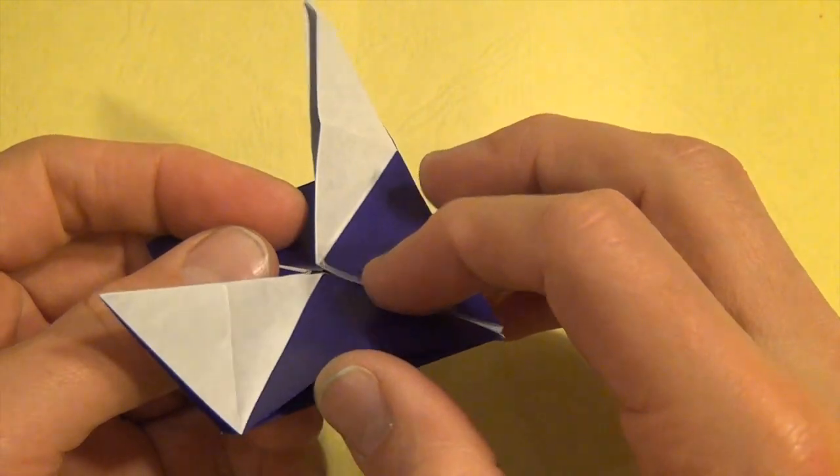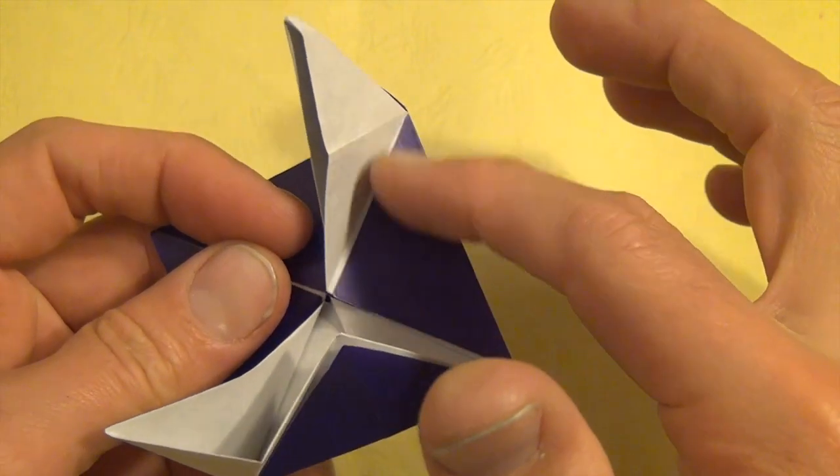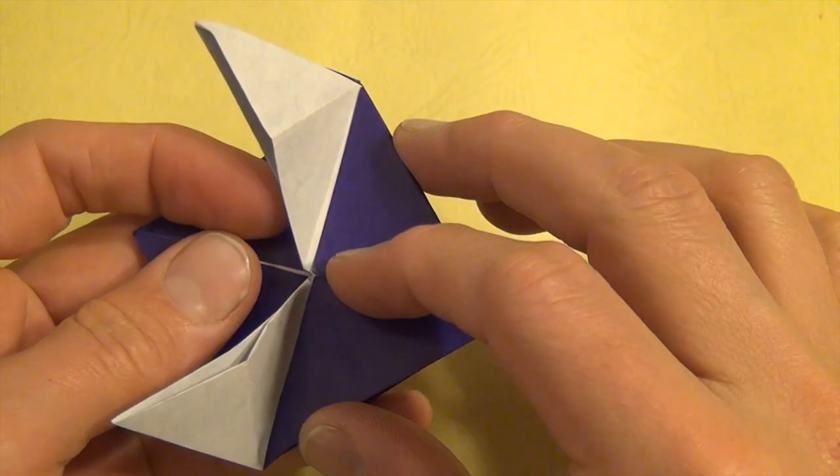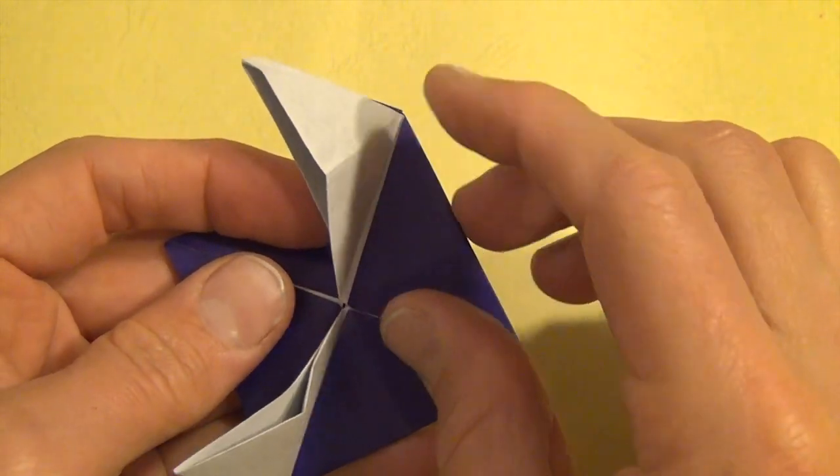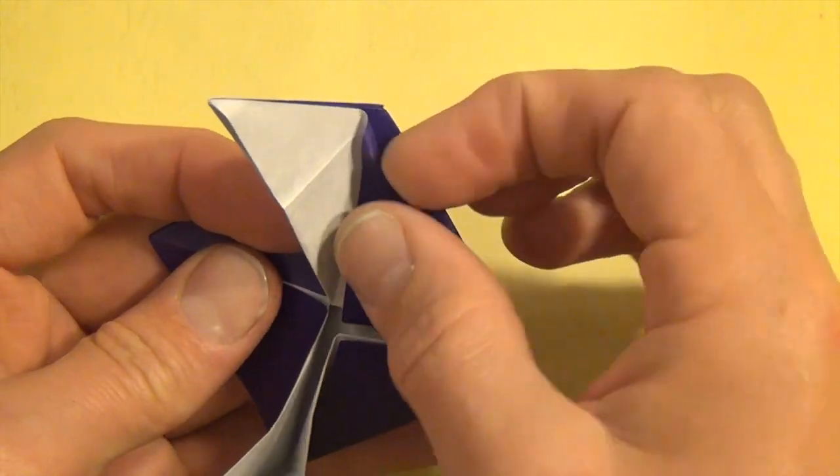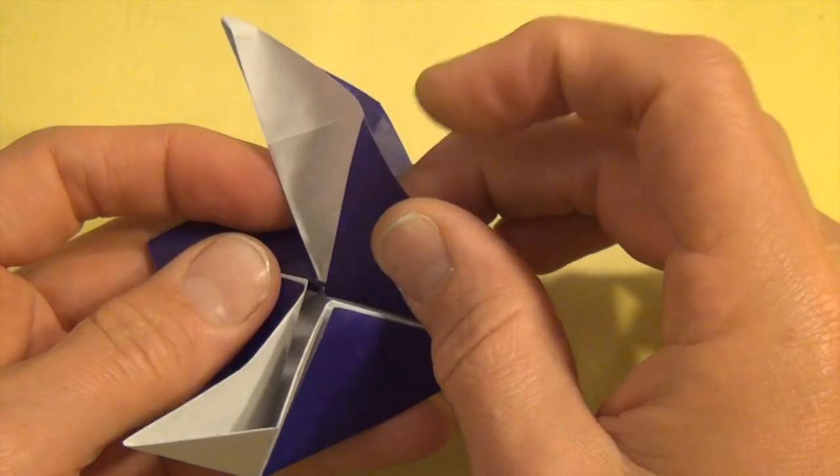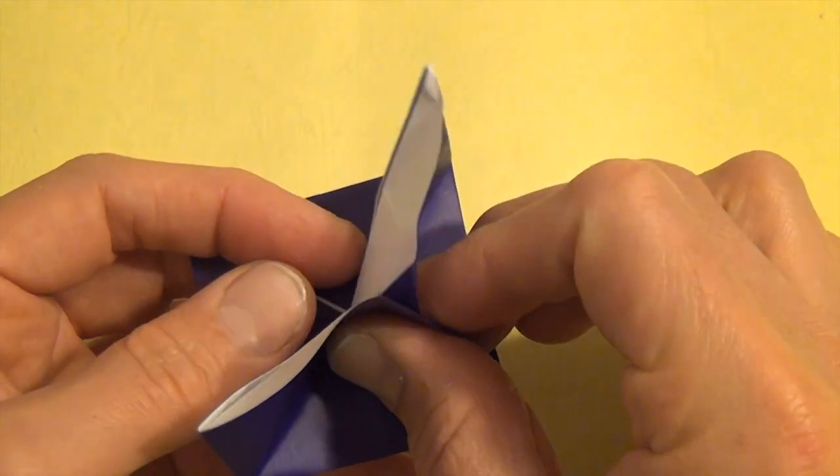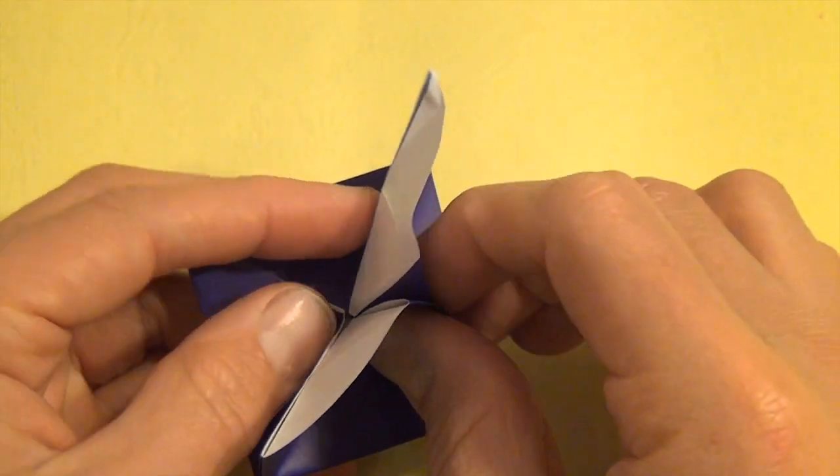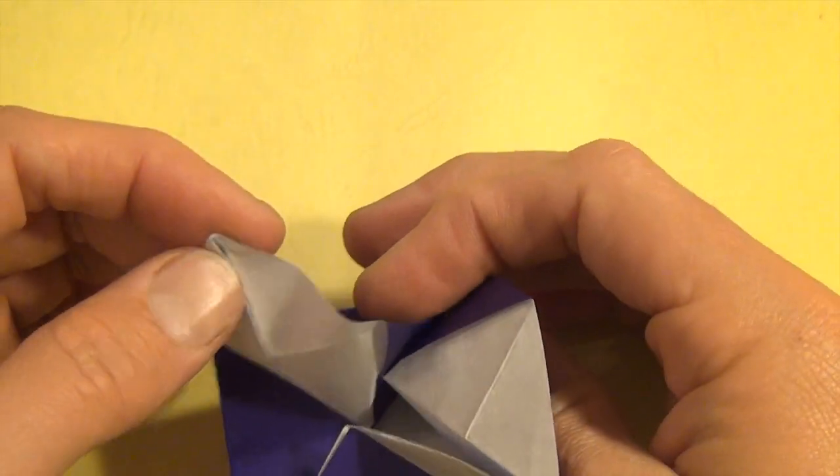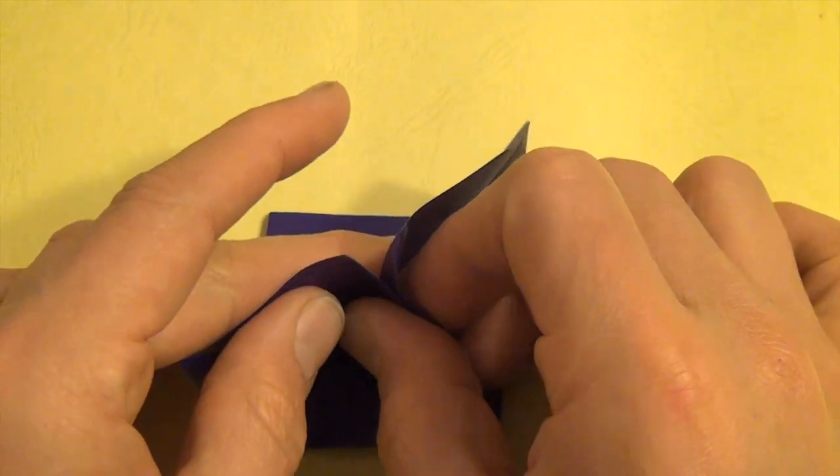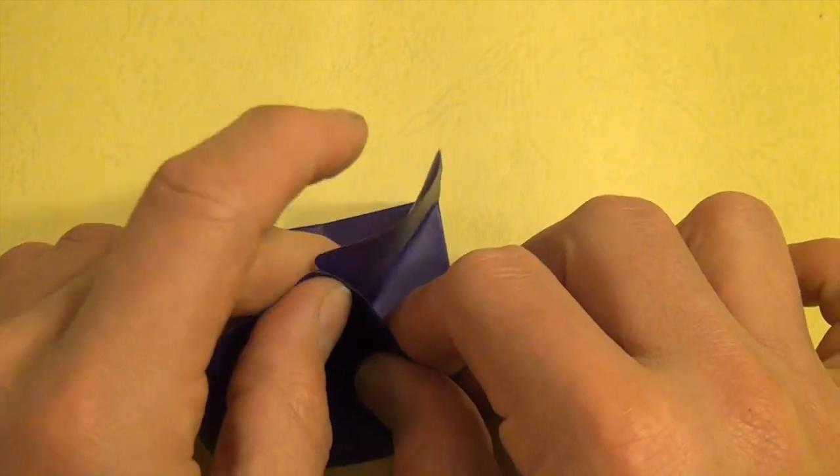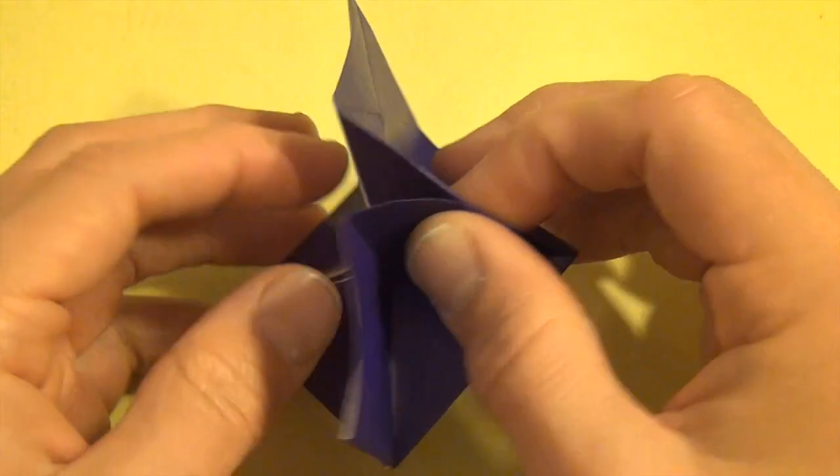Now what we're going to do is take, see these triangles right here. We're going to bring them together by lifting this flap up right here. One and two, so that the faces, those triangles touch. So they're sticking up like that.